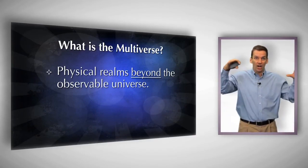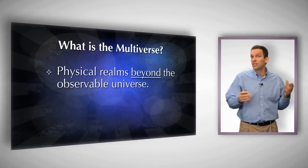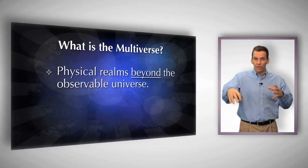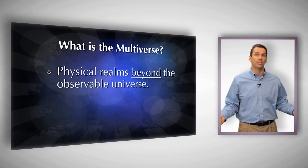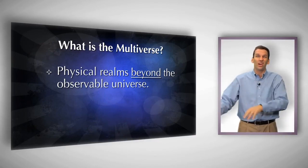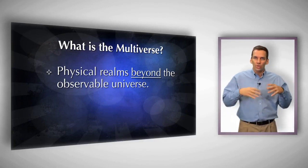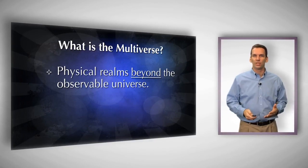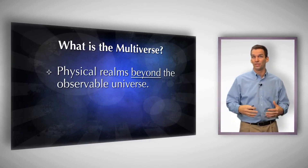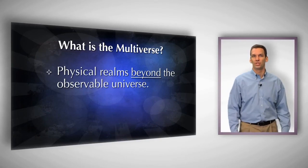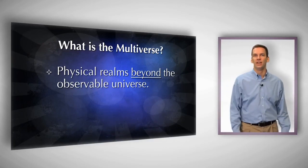We can also imagine taking all of that stuff and asking: is it possible there's something else? Maybe beyond the space-time matter and energy of our observable universe, there are things completely separate — other universes with completely different laws of physics, other space-time dimensionalities, maybe no matter, maybe only energy. Those would be other universes. When we talk about the multiverse, we can define at least two different kinds. Broadly speaking, the multiverse is simply physical realms beyond the observable universe.